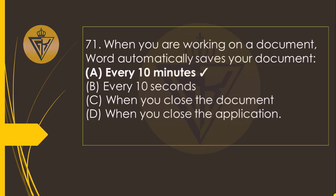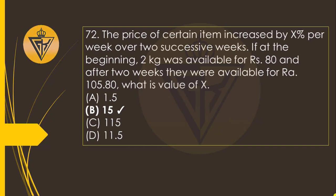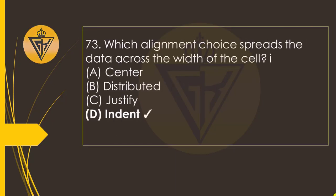When you are working on a document, Word automatically saves your document the option A: every 10 minutes. The price of a certain item increases by X percent per week over two successive weeks. If at the beginning, two kilograms was available for 80 rupees and after two weeks they were available for 105.80 rupees, what is the value of X? The option B: 15.